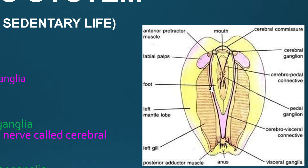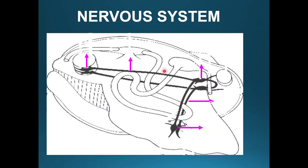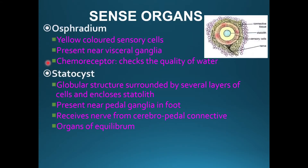These are the Cerebro-Visceral Connectives. These are Pedal Ganglia located in the foot — there are two Pedal Ganglia. This is the Cerebro-Pedal Connective. Similarly, we have the Cerebro-Pedal Connective and lastly the Visceral Mass. This is a simple, reduced nervous system.